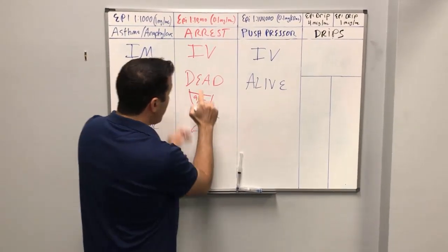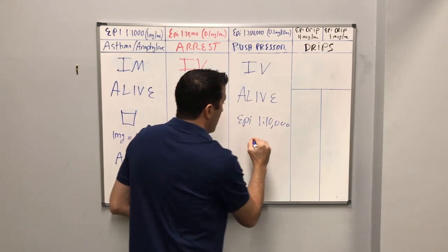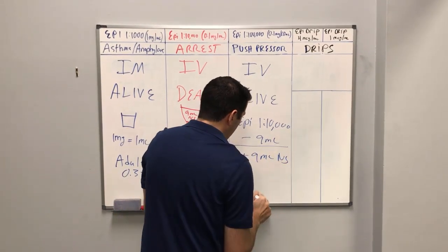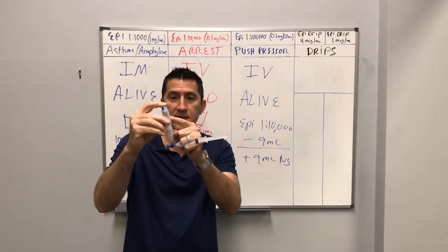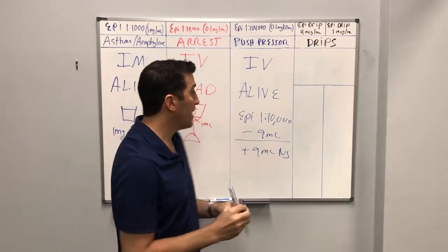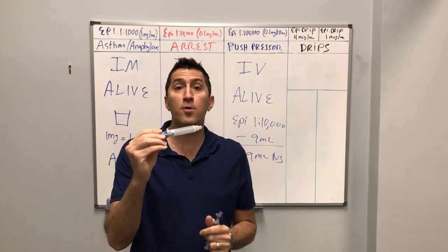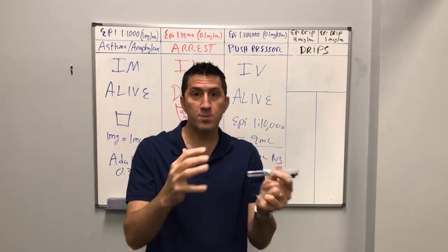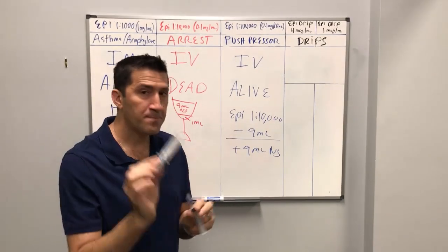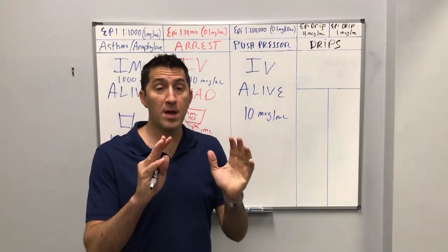All you're doing is taking 1 ml of epi 1 to 10,000, emptying out 9 ml, and then adding 9 ml of normal saline. This is exactly how you do it: I've discarded 9 ml from this pre-filled epi syringe, I take a flush and basically fill it up — that's epi 1 to 100,000. Now I can hook this up to an IV and slowly give 1 ml per minute, and I'll watch the patient's blood pressure get better. This is how you give epi for the first time to an alive person — it's quick, it's dirty, it's easy. Push pressure epi is for those of you who don't want to make a drip; it's really an awesome thing to use.